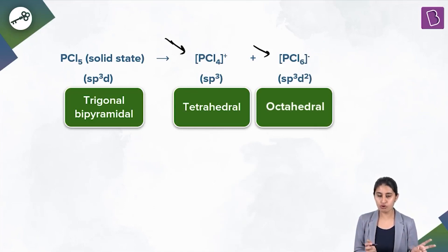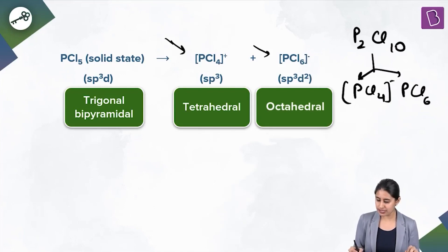In fact, two molecules of PCL5 can jumble together to give you PCL4+ P2Cl10. One phosphorus comes here, one phosphorus comes here, four chlorine comes here. Six chlorines comes here. So it becomes PCL4+ and PCL6-.